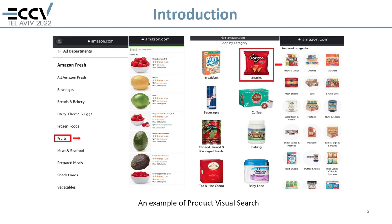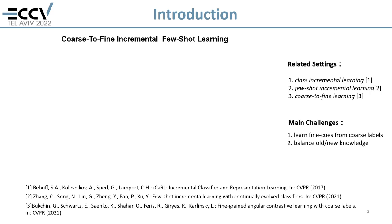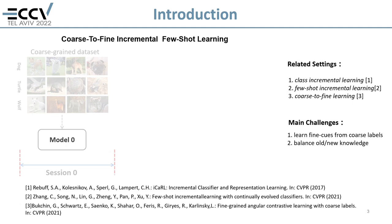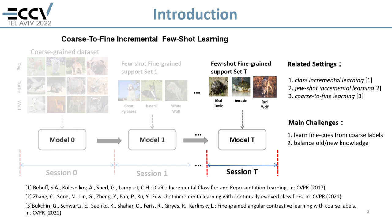There exist some related settings such as class incremental learning, few-shot class incremental learning, and coarse-to-fine hierarchical learning, and several methods have been proposed to solve the challenges in these settings. In our paper, we are interested in a coarse-to-fine incremental few-shot learning problem. The model is pre-trained for coarse classes in the base session and is required to continuously and incrementally learn fine classes from few-shot images.